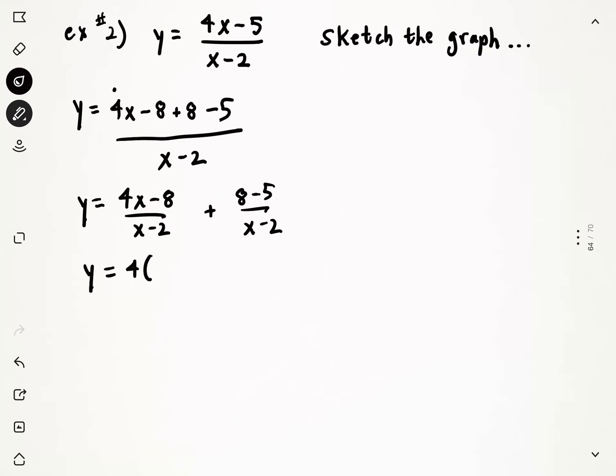And then what I can do is I can do some factoring and some simplification. I can factor out a 4 on top here, and it should work out every single time. So I have 4 outside of x minus 2, and those x minus 2s can cancel. In the second fraction, there's no factoring or canceling to do, but I can take 8 minus 5 and make that a 3.